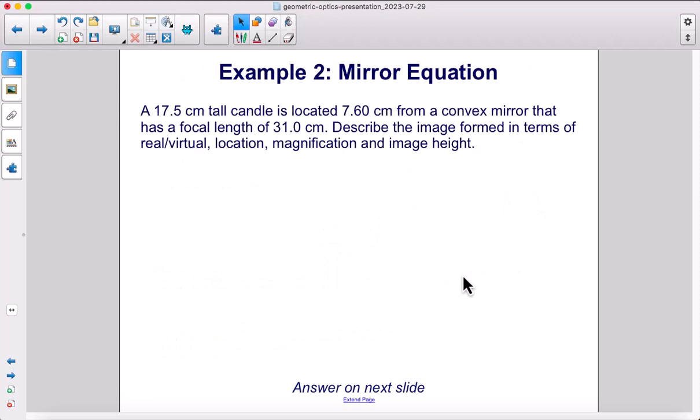A 17.5 centimeter tall candle is located 7.6 centimeters from a convex mirror that has a focal length of 31 centimeters. Describe the image formed in terms of real or virtual, location, magnification, and image height.